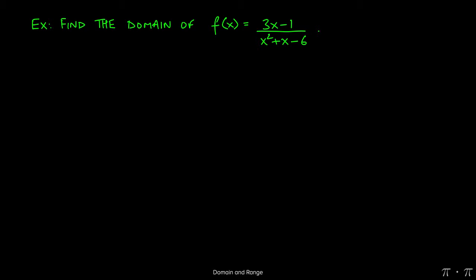Let's say we're asked to find the domain of this function, 3x minus 1 over x squared plus x minus 6. We start by recognizing that this is a rational function, and rational functions cannot have zeros in the denominator. Division by zero is illegal.